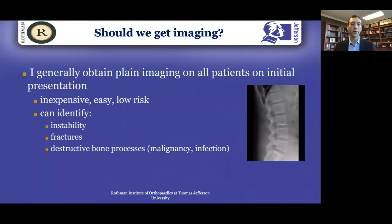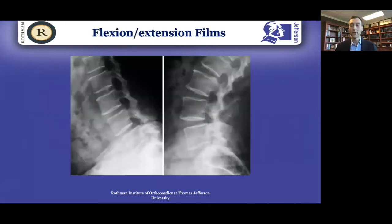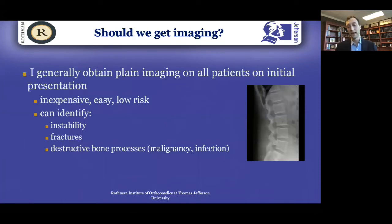Should we get imaging? My personal practice is that everyone who comes into my office gets a plain x-ray — they get an x-ray and they flex and extend. We have to be wardens of healthcare costs. This is a cheap, easy, super low risk test, and for such low risk you can get useful information. It can easily identify a fracture. On flexion-extension films, you can identify spinal motion where the bones shift on one another, called a spondylolisthesis. And rarely, you can pick up things like malignancy and infection.